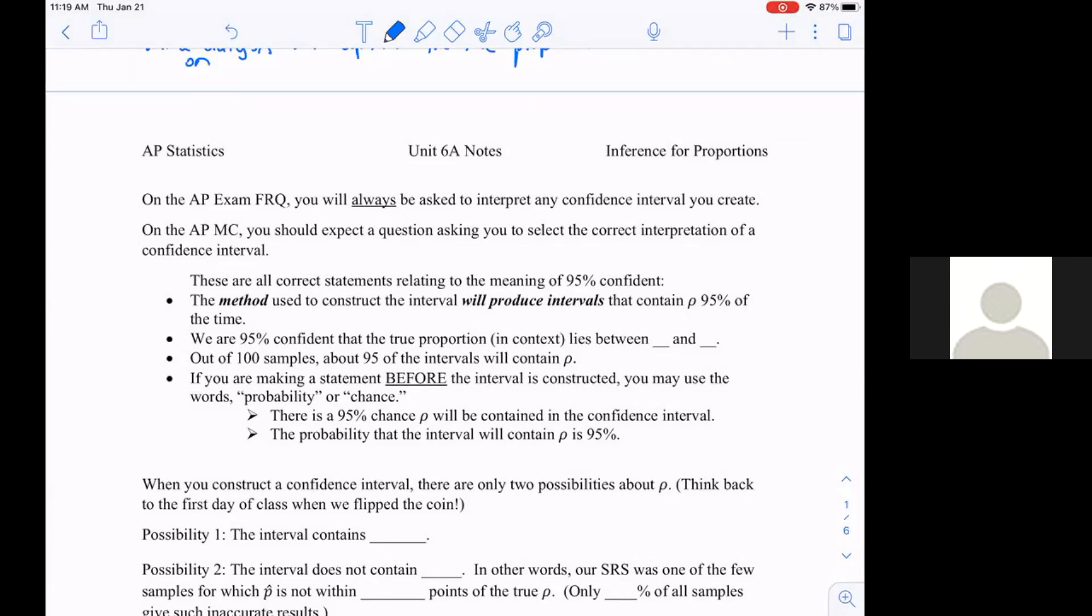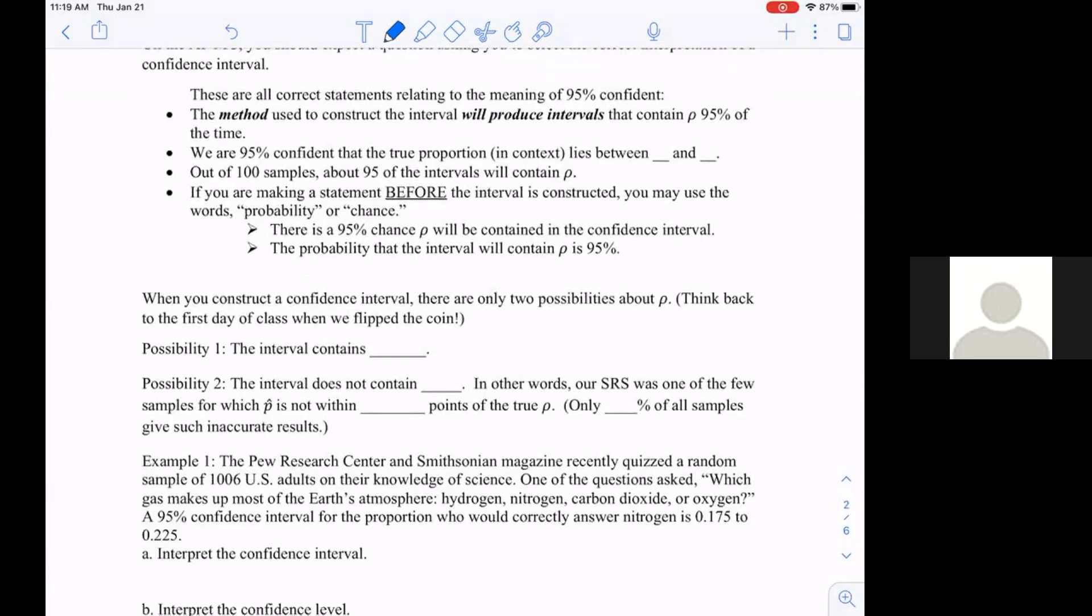When you construct a confidence interval, there's only two possibilities. My interval is either going to contain the estimated value or it's not going to contain it. A lot of times we'll do the difference between two things, and if that difference is zero, we'll check if zero is in the interval. We'll create an activity where we'll estimate whether the true proportion is contained within that interval or not.